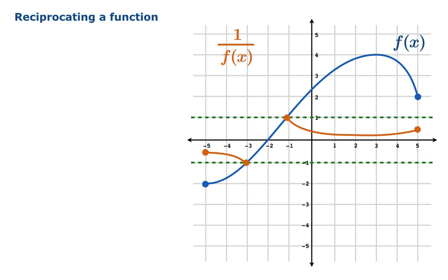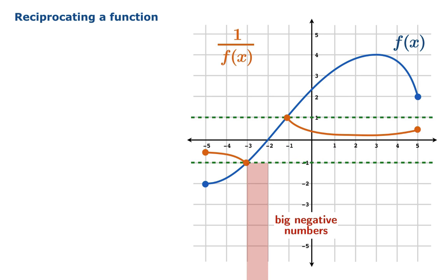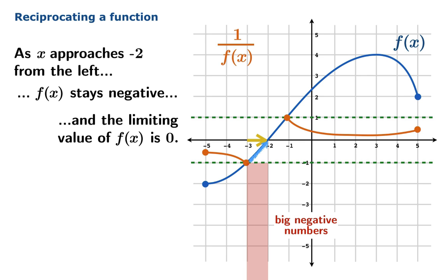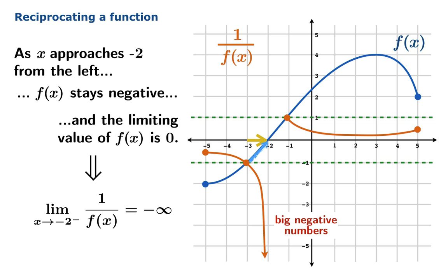Now what remains is an analysis of the slippery bit. Here's a region where you have values that are small negative numbers, so we expect these to reciprocate to big negative numbers. As you approach negative 2 from the left, the values of f stay negative and approach 0. So we will be reciprocating tinier and tinier magnitude numbers, giving us huge magnitude negative numbers. The punchline is: the limiting value of 1 over f as x comes into negative 2 from the left should be negative infinity.